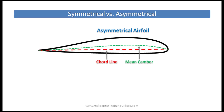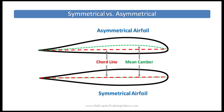Here's an example of an asymmetrical airfoil. You can see how the cord line does not line up with the mean camber, so the upper and lower half of the airfoil are not symmetrical. Compare that to a symmetrical airfoil, where the mean camber line and the cord line match because the top half and the bottom half of the airfoil are symmetrical.